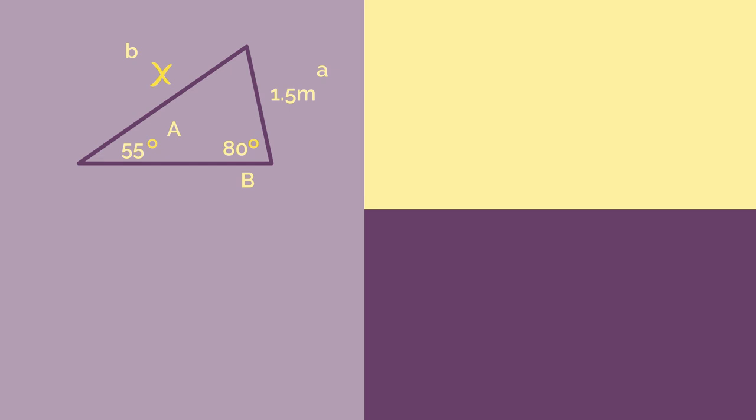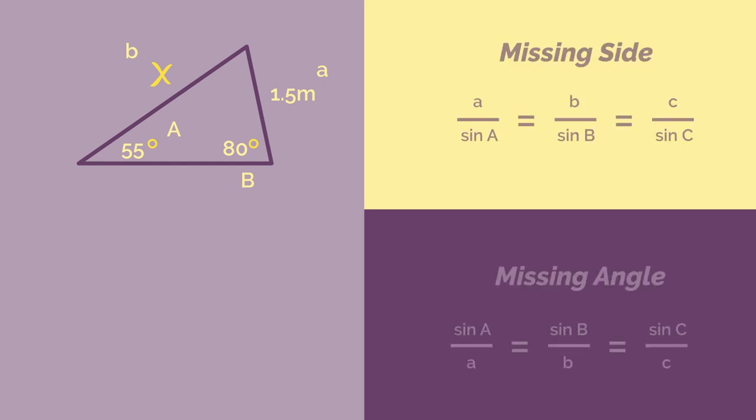We need to find a missing side, so we'll use this version of the formula. We just substitute in the numbers and we get 1.5 divided by sine 55 equals b divided by sine 80.